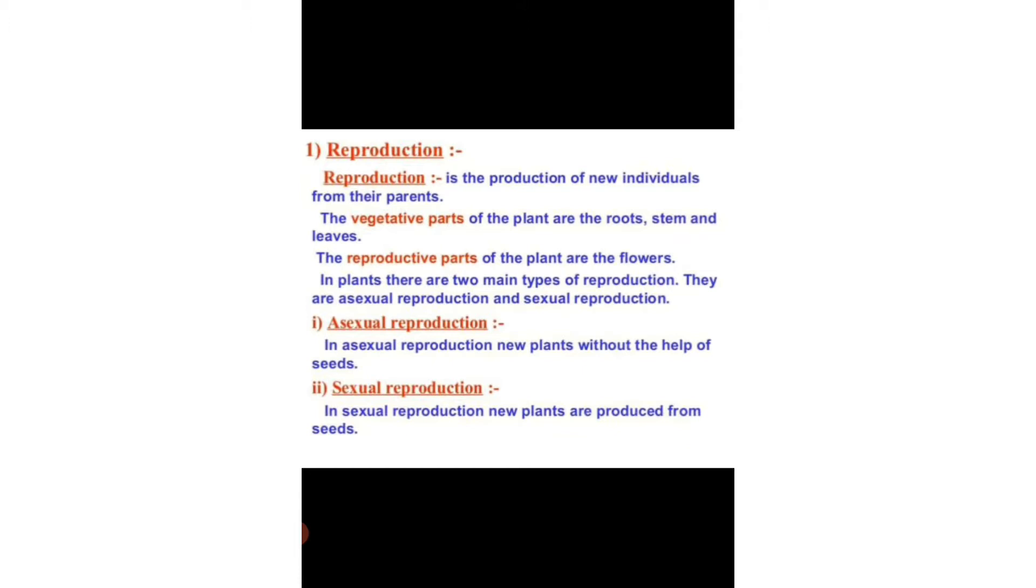So first we will learn what is reproduction. Reproduction is the production of new individuals from their parts. The vegetative parts of the plant are the roots, stem and leaves.